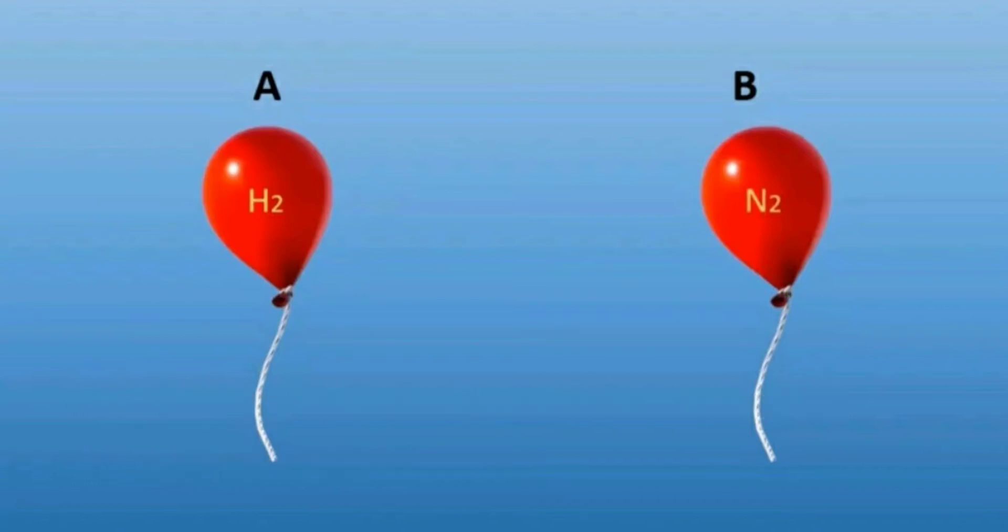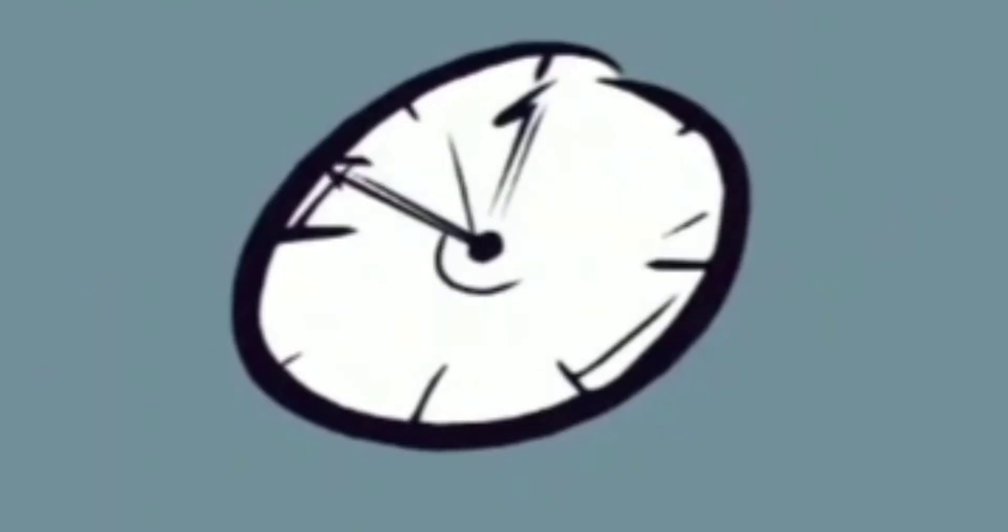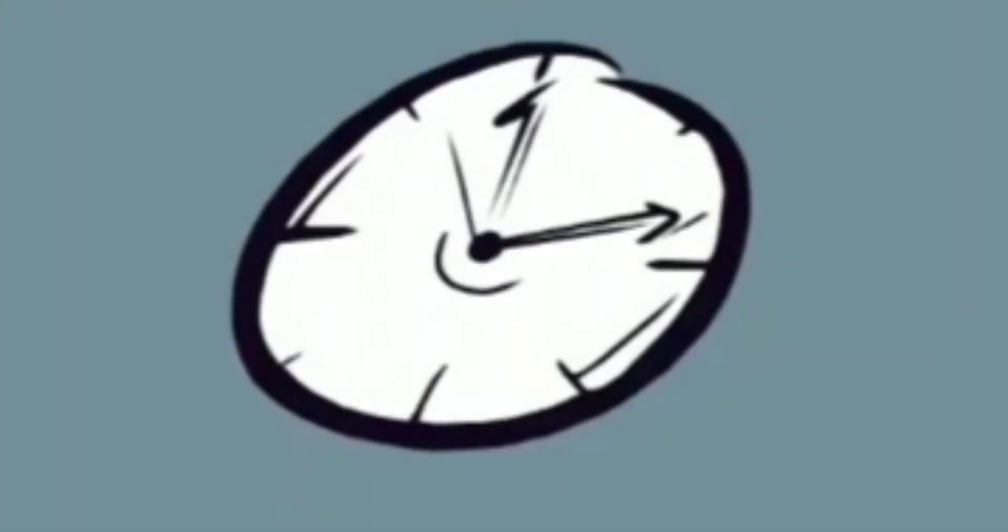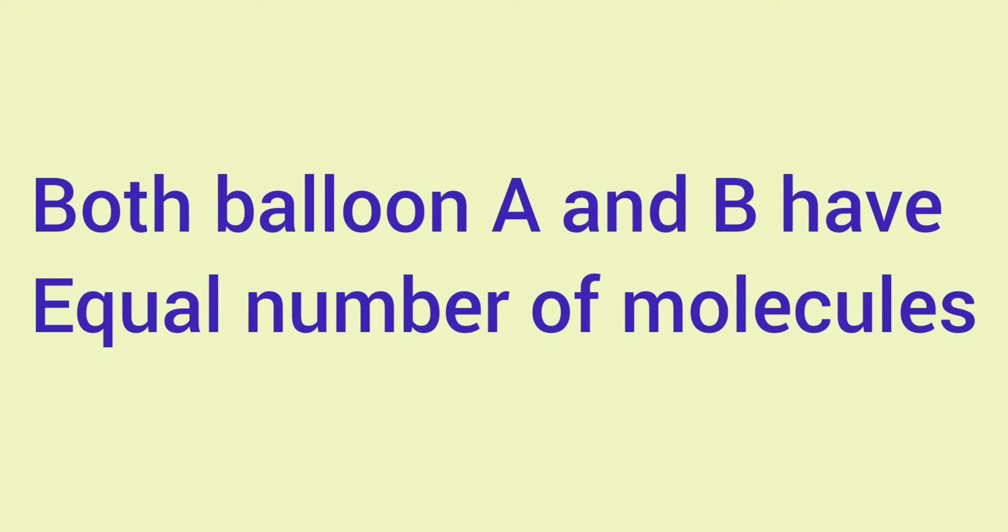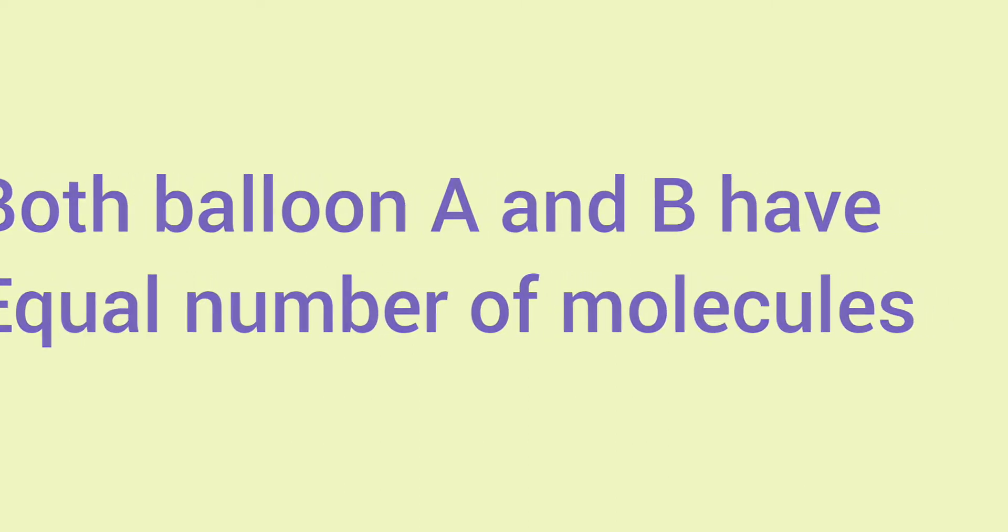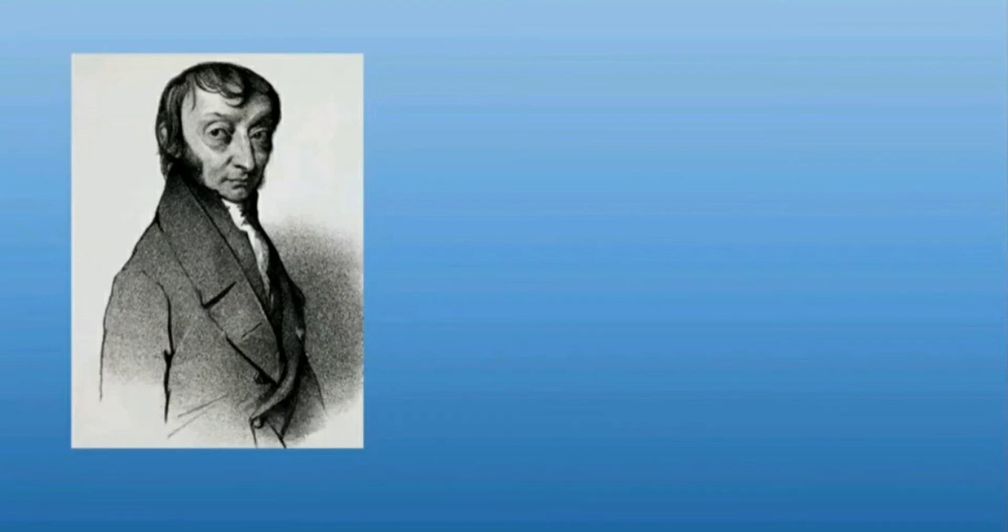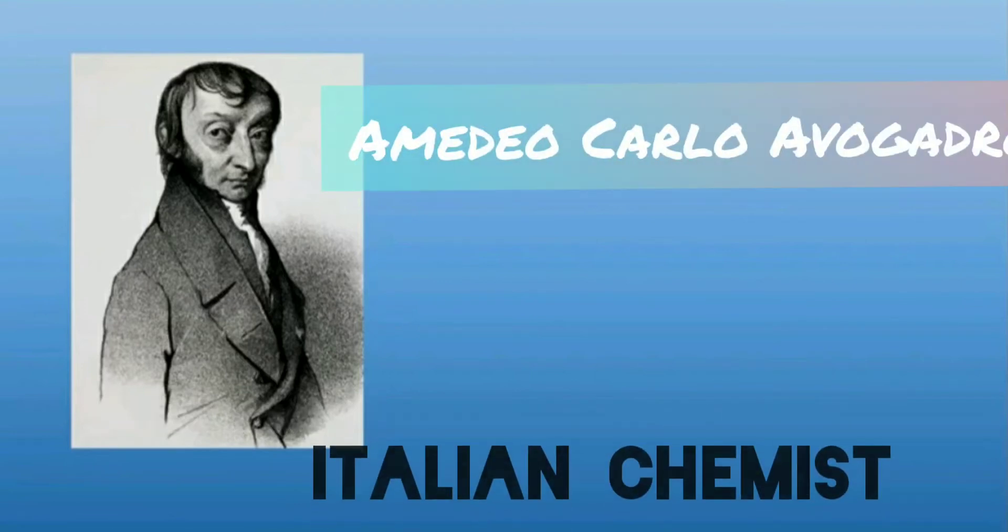Your time starts now. Try to guess which has more molecules. Any guesses? It was found that both balloon A and B had equal number of molecules. One is hydrogen gas, the other is nitrogen, but still they had equal number of molecules. How is it possible?